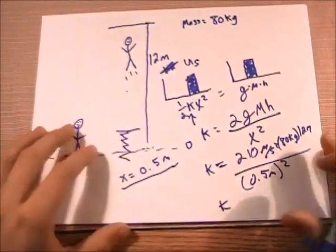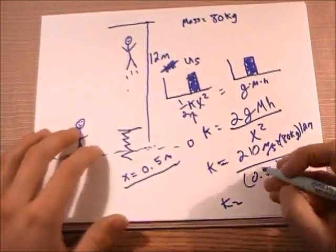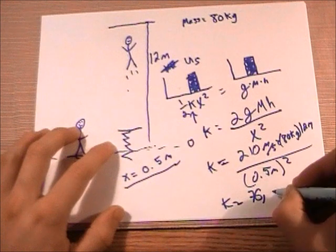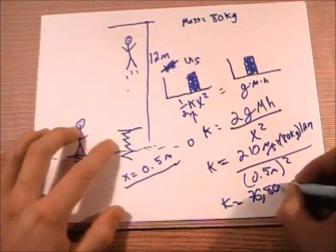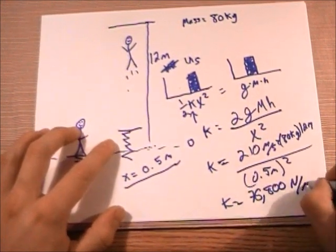And when you solve for k here, I'm getting this value to be 76,800 newtons per meter.